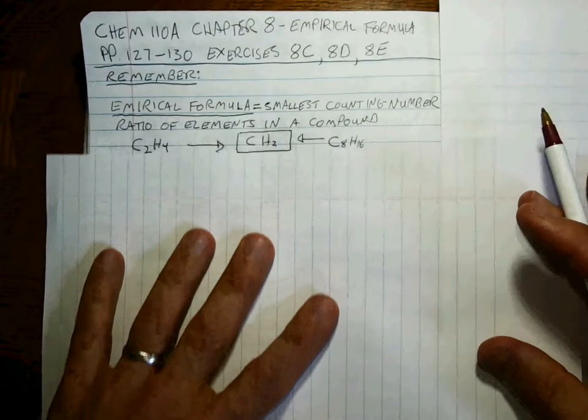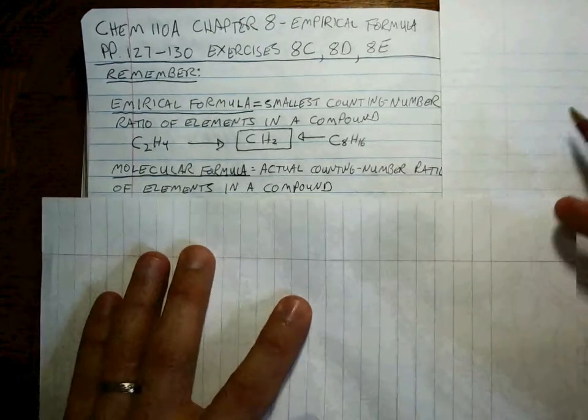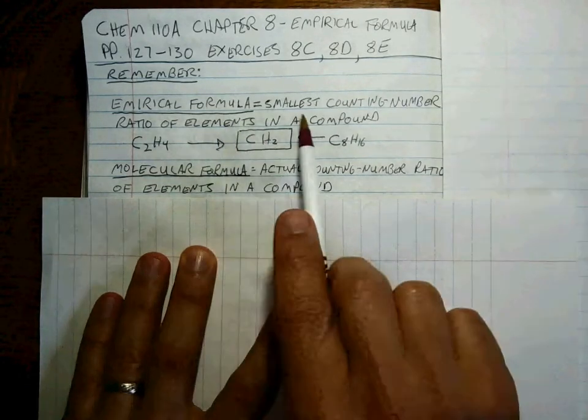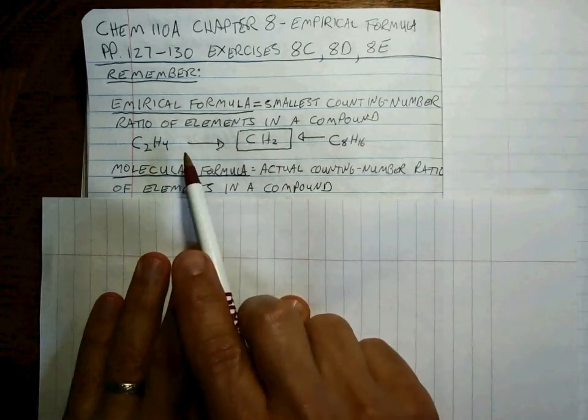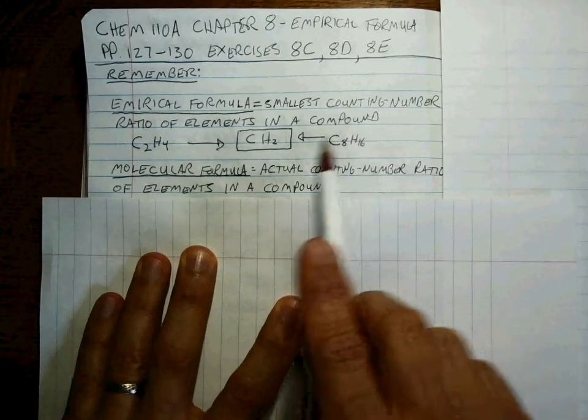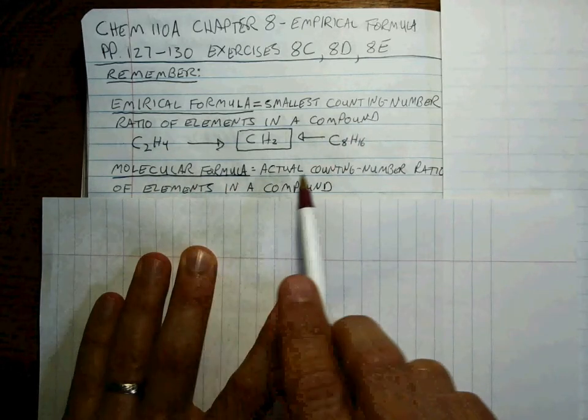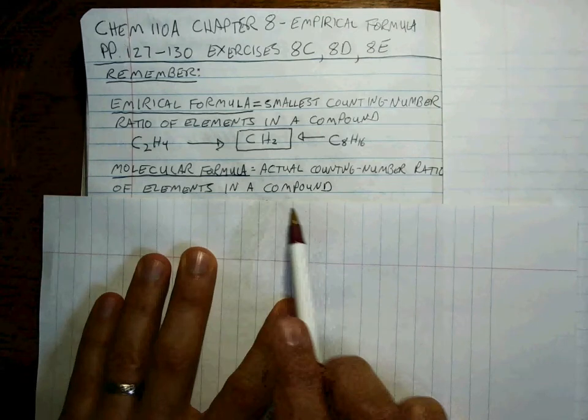Well, empirical formula is the smallest counting number ratio of elements in a compound. The molecular formula is the actual counting number ratio of elements in a compound.